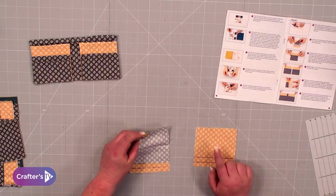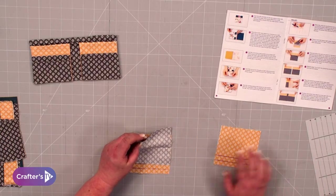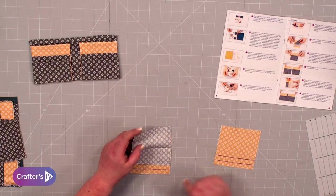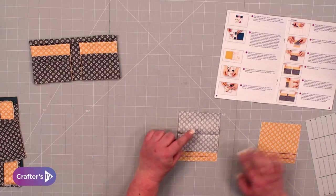What you're going to do next is take your card slot fabric. On ours, the background is the peach color, the card slot is the gray.